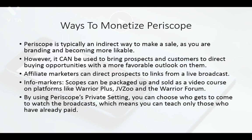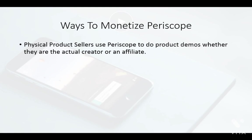By using Periscope's private setting, you can choose who gets to actually watch your broadcast, meaning you can teach only those who have already paid you — in effect, teaching a class live and only allowing paying customers to see it. It's an easy way to monetize and create content that only a certain number of people will see. Physical product sellers can also use Periscope to do product demos, which is a fantastic way to demonstrate to people that what they're about to buy actually works — they can see the product in action, making them more willing to buy.